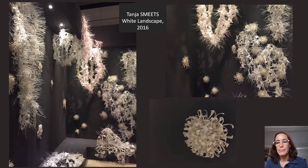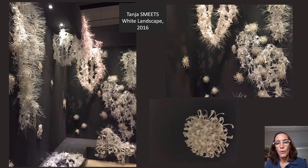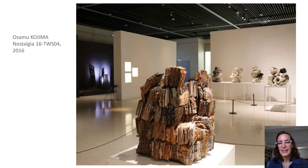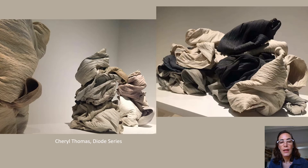This poetic installation is by Tania Smets, a Dutch artist I invited as artist in residence. She worked in a porcelain factory with workers specialised in making porcelain flowers — chrysanthemums and peonies — and developed this amazing white landscape featuring chrysanthemums as well as industrial waste, cable ties and felt offcuts. In this slide you see a sculpture by Osamu Kajima, a Japanese national living and working in Taiwan, who works with traditional Taiwanese roof tiles, amassing them into incredible sculptures. In the background is a work by Cheryl Thomas, an American artist, who makes impressive diode series that look like collapsed textiles.